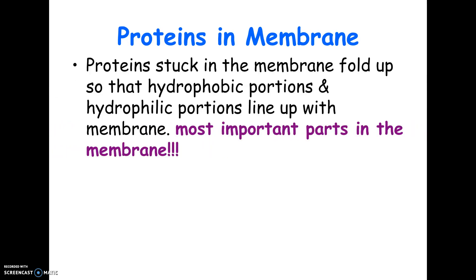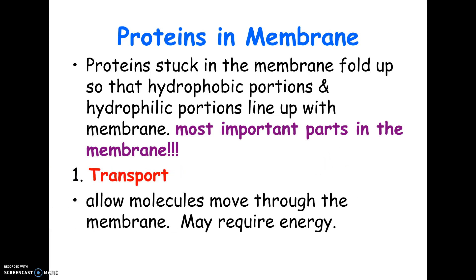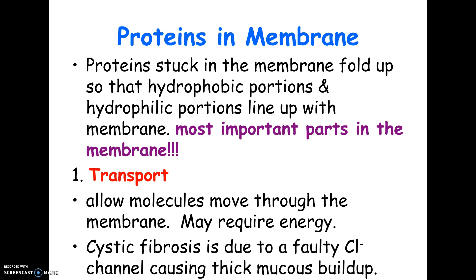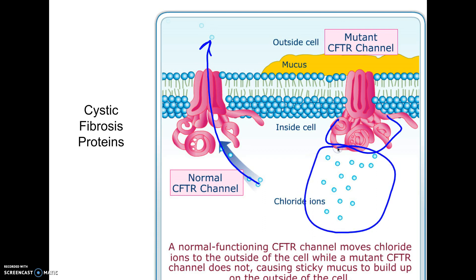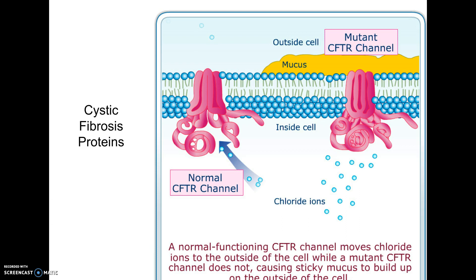The proteins in the membrane have different jobs — they are actually the most important part, folding into specific shapes. There are five functions. First: transport — proteins that let things move in and out, sometimes requiring energy. Cystic fibrosis is an example where a transport protein is genetically misstructured; it's supposed to allow chloride ions to flow through, but the faulty protein folds tightly, chloride ions get stuck, and mucus builds up in the respiratory and intestinal tracts — showing how one wrong protein causes major problems.